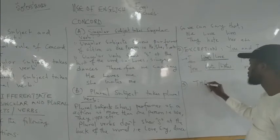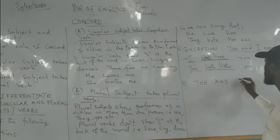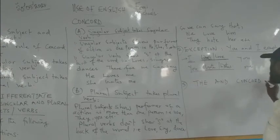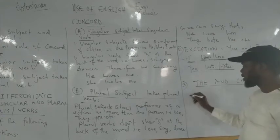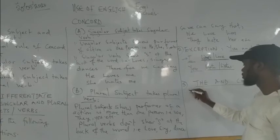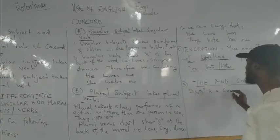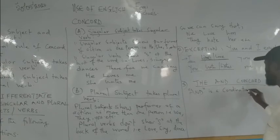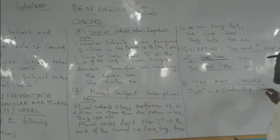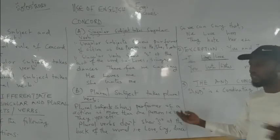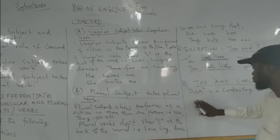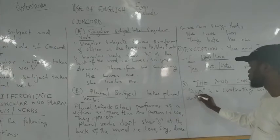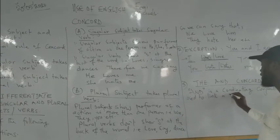Let's take the AND rule. AND is a coordinating conjunction. It links two sides together. Sometimes we use it to link a list or varieties.